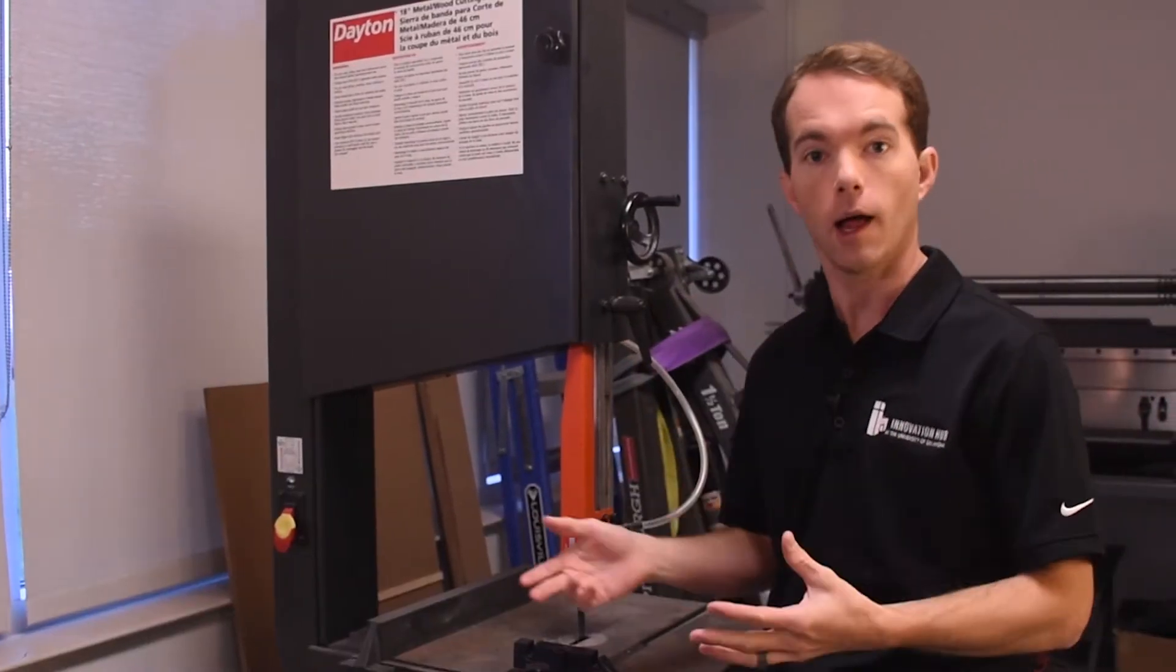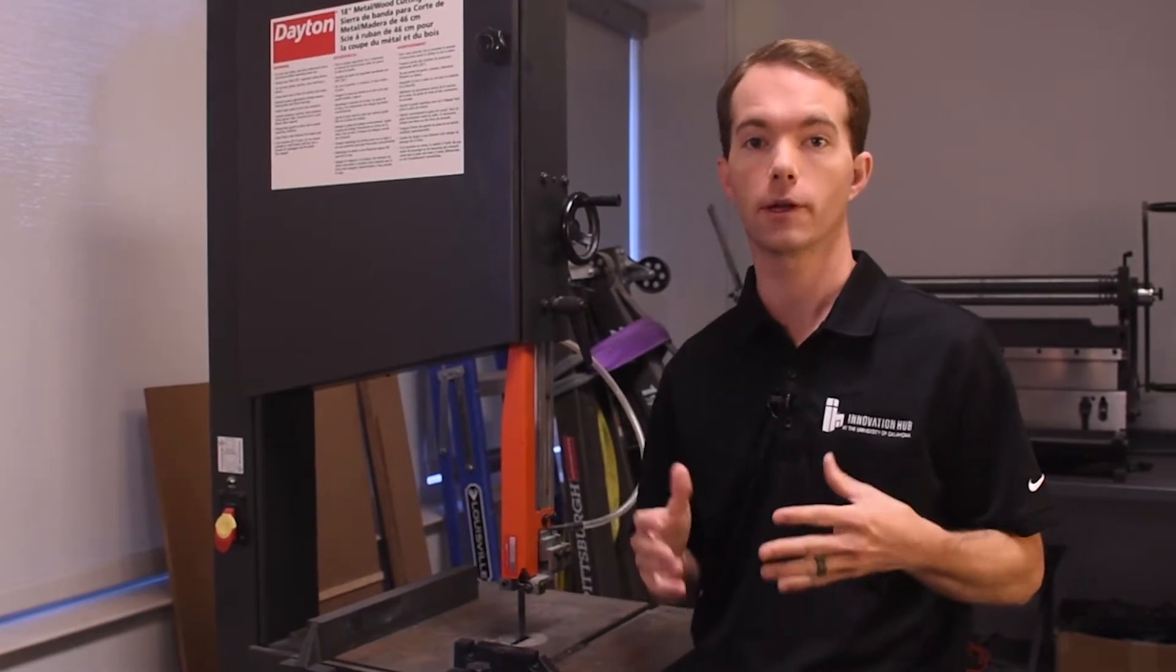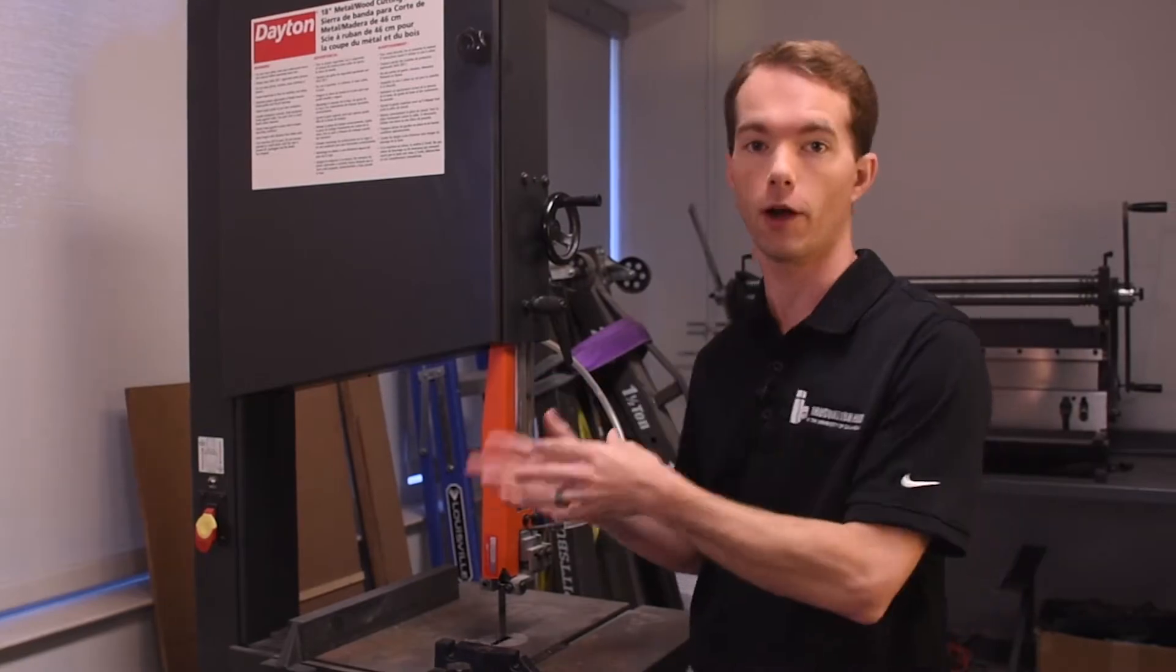Metal cutting bandsaw, a lot like the wood bandsaw, is used to cut straight and curve things out of metal. It'll do thick metal, it'll do thin metal. There's a few things to bear in mind though, before you run off and start to use this.